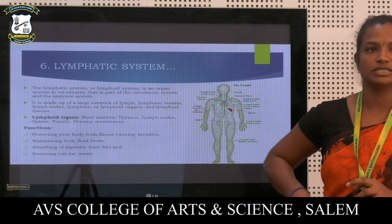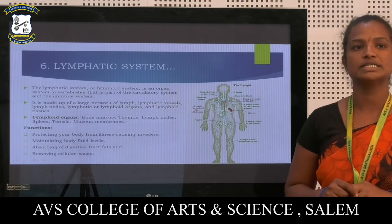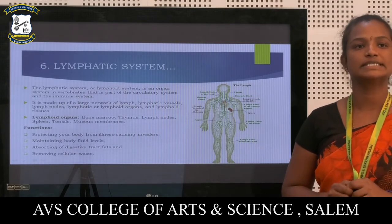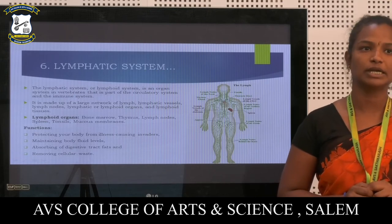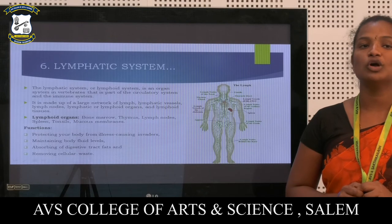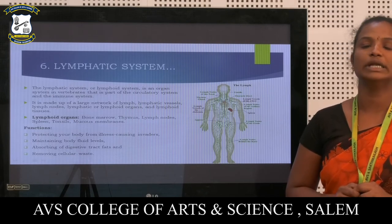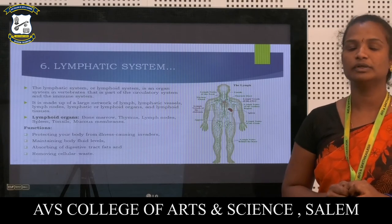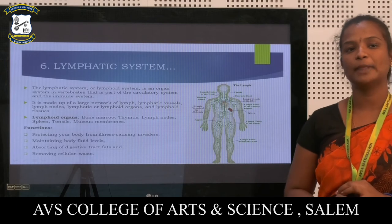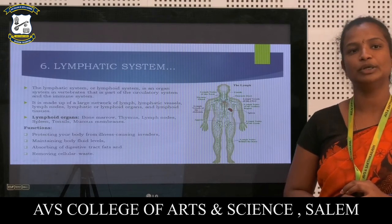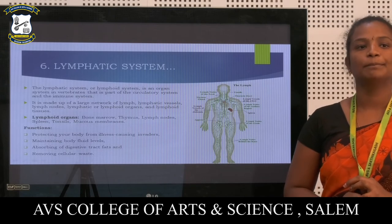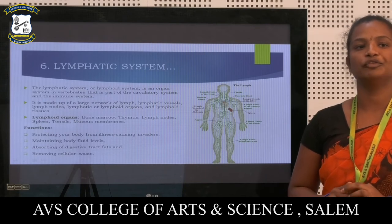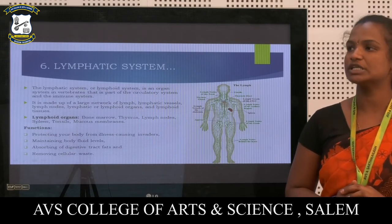The lymphatic system, or lymphoid system, is an organ system in vertebrates that is part of the circulatory system and the immune system. It is made up of a large network of lymphatic vessels, lymph nodes, lymphatic or lymphoid organs, and lymphoid tissues. Lymphoid organs include bone marrow, thymus, lymph nodes, spleen, and tonsils. Functions include protecting your body from illness-causing invaders, maintaining body fluid levels, absorbing digestive tract fats, and removing cellular waste.